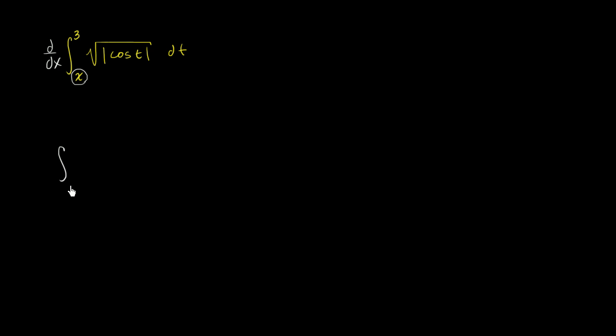So if I'm taking the definite integral from a to b of f of t dt, we know that this is capital F, the antiderivative of f evaluated at b minus the antiderivative of f evaluated at a. This is essentially corollary to the fundamental theorem, or it's the fundamental theorem part two, or the second fundamental theorem of calculus. This is how we evaluate definite integrals.